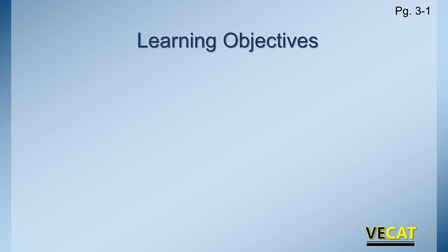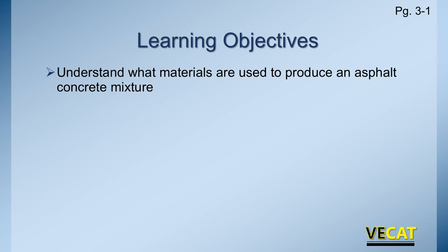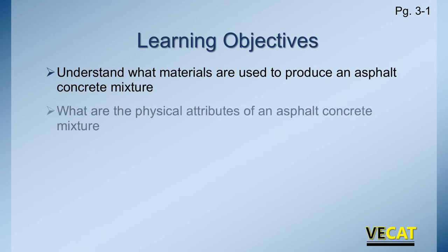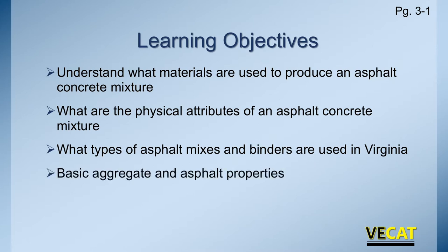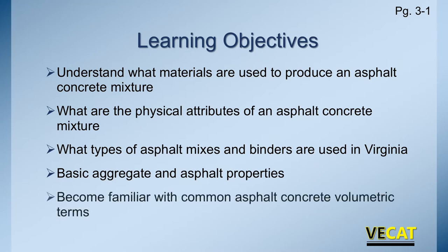What do we hope for you to learn as we go through this module? What materials are used to produce an asphalt concrete mixture? What are the physical attributes of an asphalt concrete mixture? What types of mixes and binders do we use currently in Virginia? What are the basic aggregate and asphalt properties that we look at? And we want you to become familiar with common asphalt volumetric terms. As we go through future modules, we'll get into more detail of what these volumetric terms mean and how do you test for them.